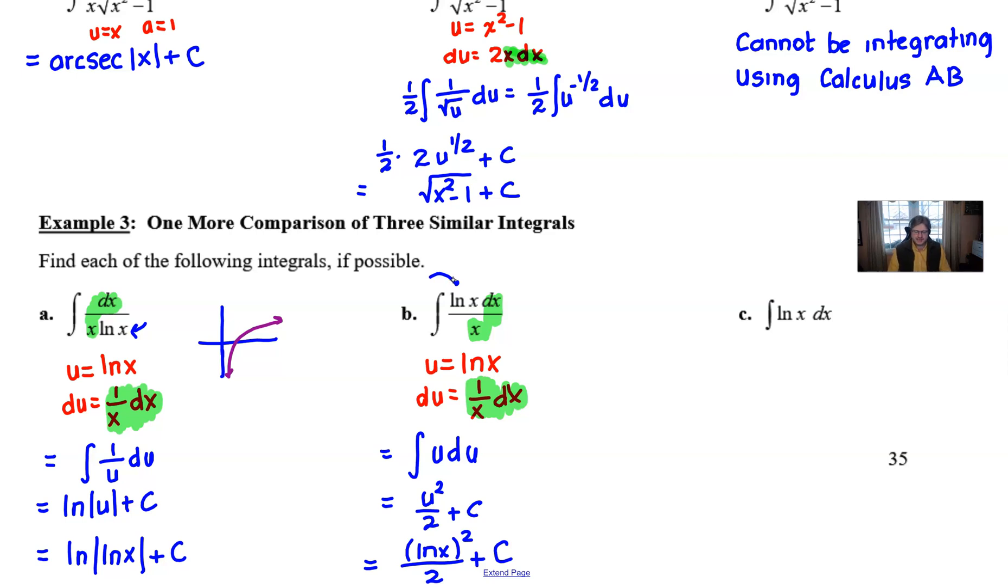Now, if we take a look at part c. Remember, I'm teaching this from the standpoint of an AB student. So if you're a BC student watching this, you might be thinking, hey, I know how to integrate this. Well, as far as we are standing right now, c cannot be integrated. Cannot be integrated. And you know what? I just noticed I don't know how to speak English. In my last video, I said integrating. So I'm going to change that. Cannot be integrated using calculus AB. And the reason is there's just not enough going on.